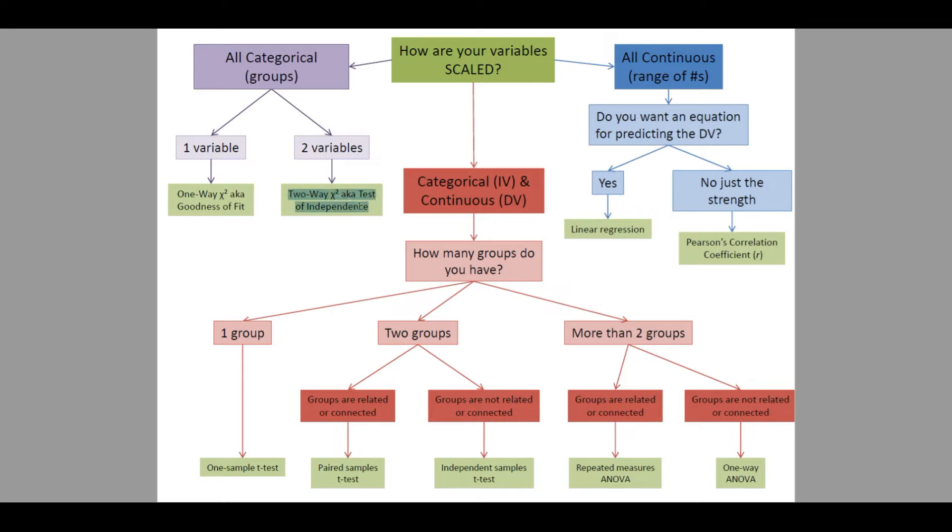So, for example, we didn't go over a two-way chi-squared test of independence. We only reviewed a one-way chi-squared goodness-of-fit test. However, at least you can see there is the possibility there is an additional more sophisticated or advanced version there. Additionally, I have listed a repeated measures ANOVA, which we talked about briefly in class, but we did not go into in-depth.